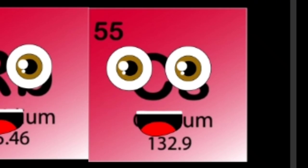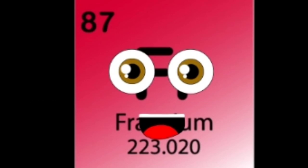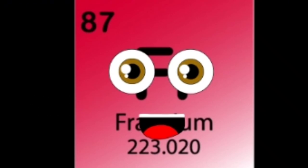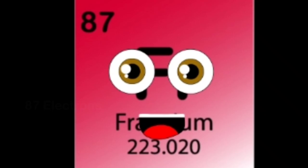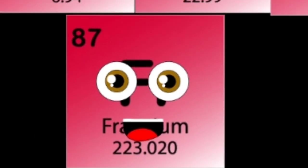My electron count is also 55. I'm primarily found in the mineral pollucite. I'm the francium atom from the alkali group. I have 87 protons, and I like to spin and dance. My name was given to me after the country of France.